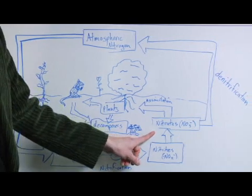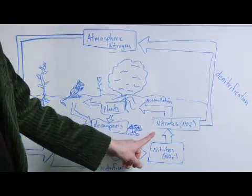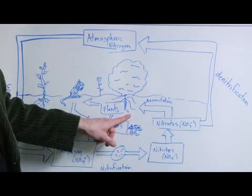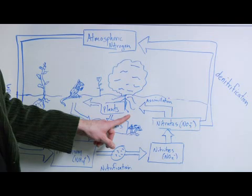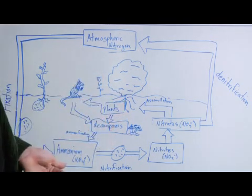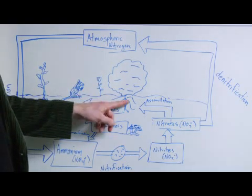So now we're ready for plants to take up these nitrates and ammonium. This process is called assimilation, and basically plants assimilate nitrogen in a usable form into their roots. They build cell structures, they incorporate it into chlorophyll, and all sorts of different things.